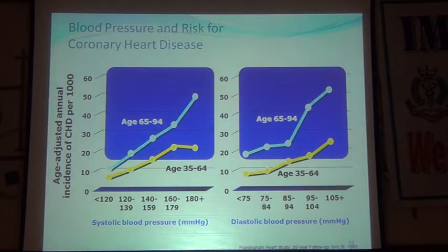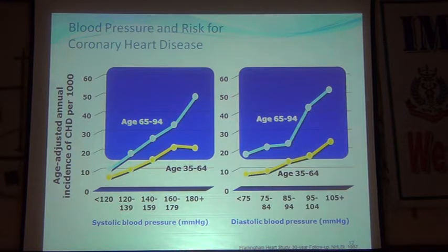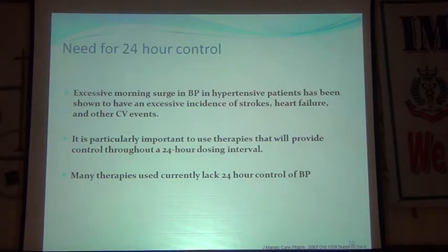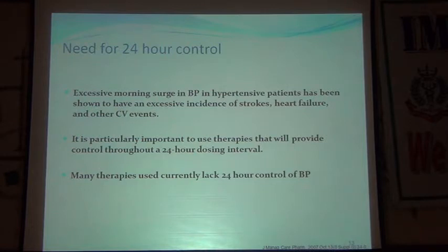Regarding blood pressure and coronary heart disease risk: as age advances, systolic blood pressure is more directly related to coronary risk. In the 65-94 age group, rising systolic BP causes a steep increase in coronary heart disease. In younger age groups, diastolic blood pressure is more important. Not only must BP be controlled, it must be controlled for 24 hours — excessive morning surge in hypertensive patients leads to increased strokes and coronary events, with events peaking around 3-4 AM.